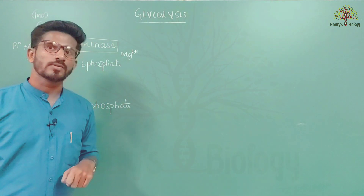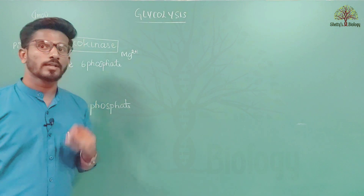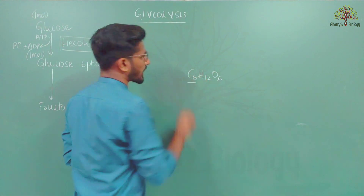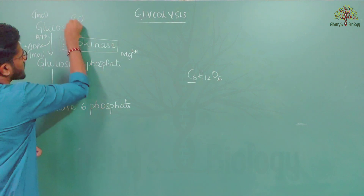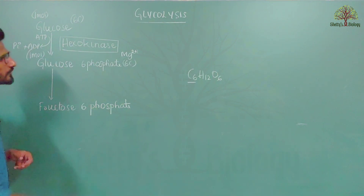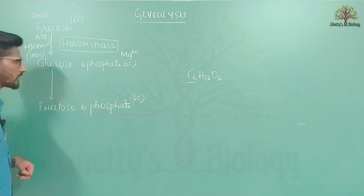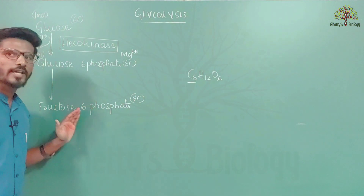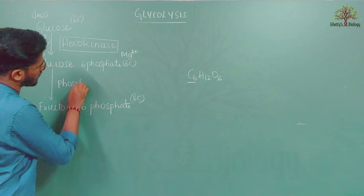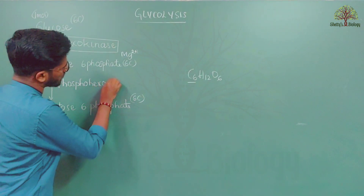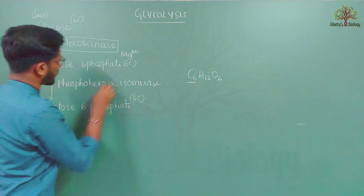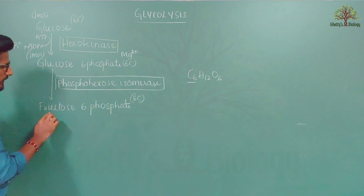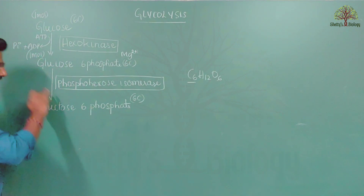The molecular formula of glucose is C6, so glucose has 6 carbons. Fructose-6-phosphate also maintains 6 carbons. Glucose-6-phosphate is converted into fructose-6-phosphate by the activity of the enzyme called phosphohexose isomerase. Remember, glucose-6-phosphate to fructose-6-phosphate is an isomerization reaction.